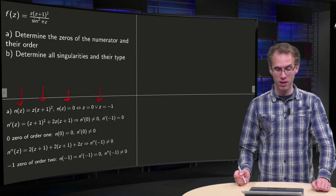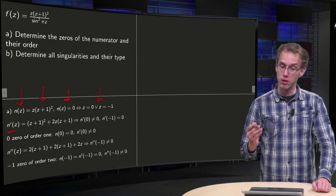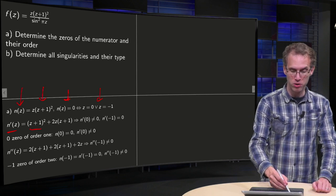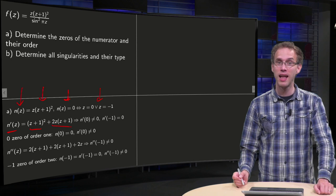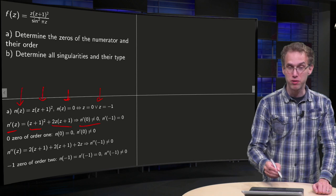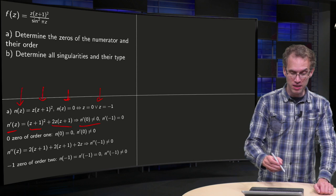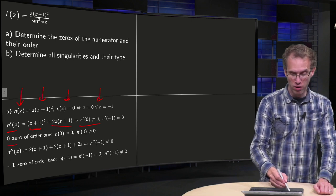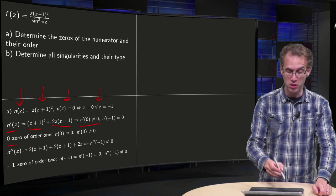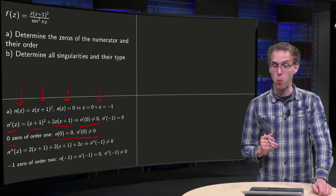What about the order? For that we need N prime of z as well, so we compute the derivative of N using the product rule: we get (z plus 1) squared plus 2 times z times (z plus 1). We observe that N prime of zero equals 1, which is not equal to zero. Since N of zero is zero but N prime of zero is not zero, zero is a zero of order 1.